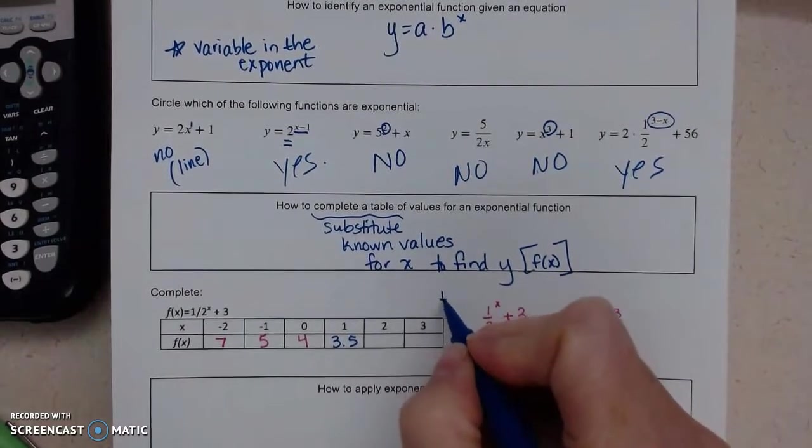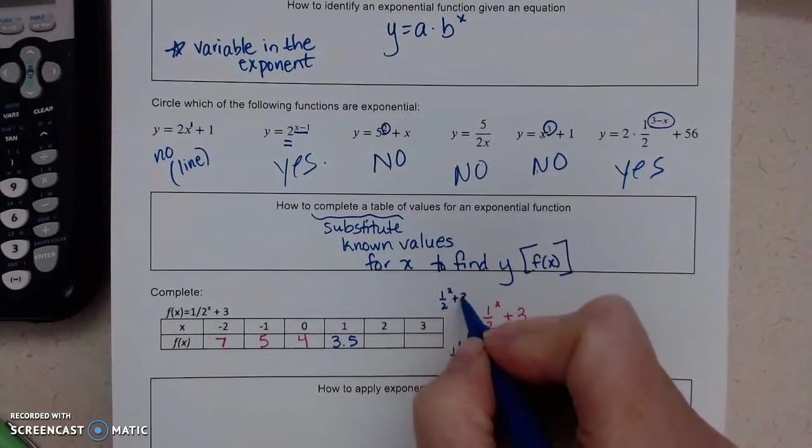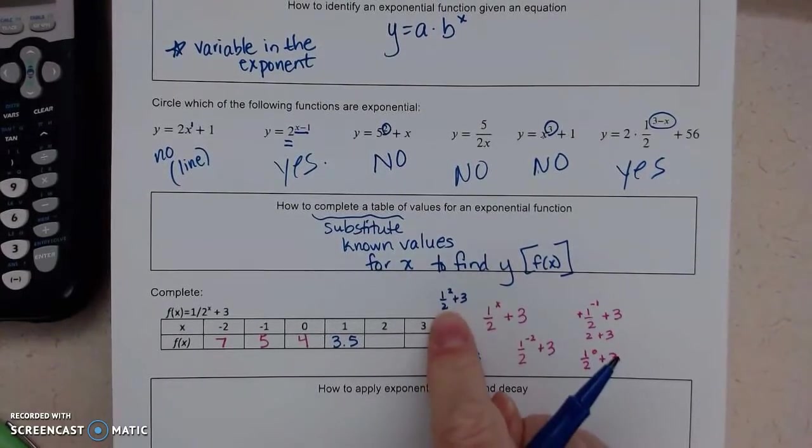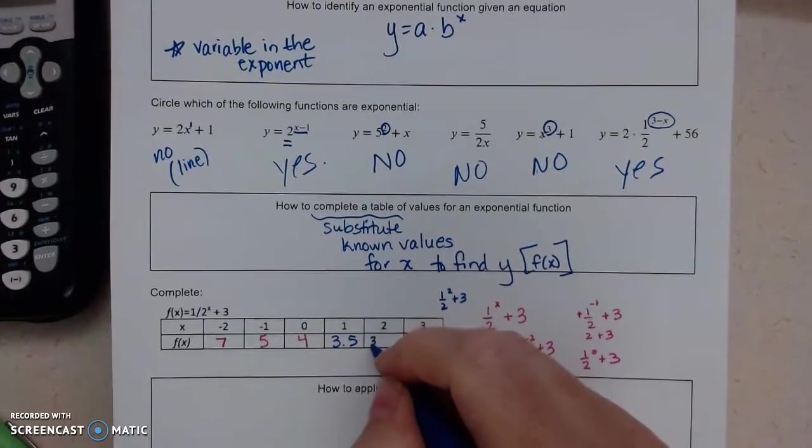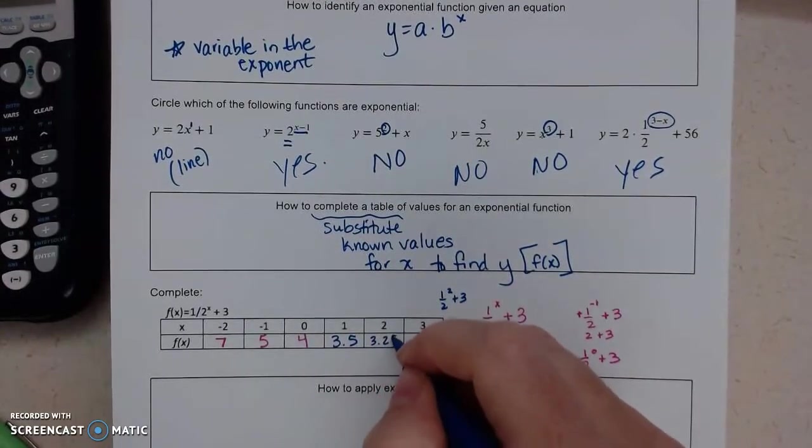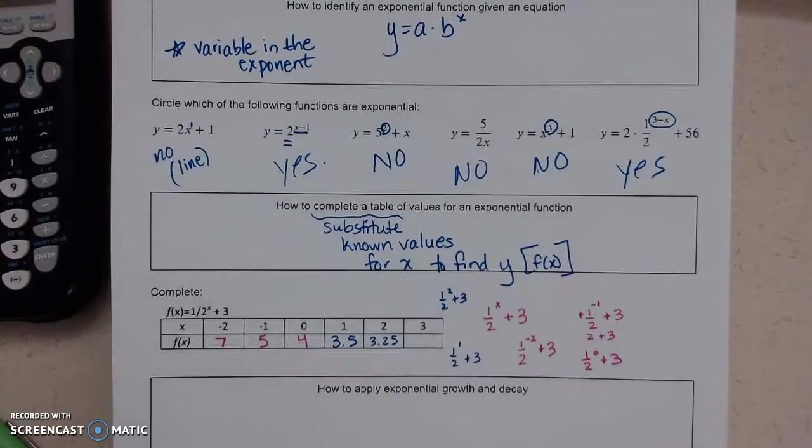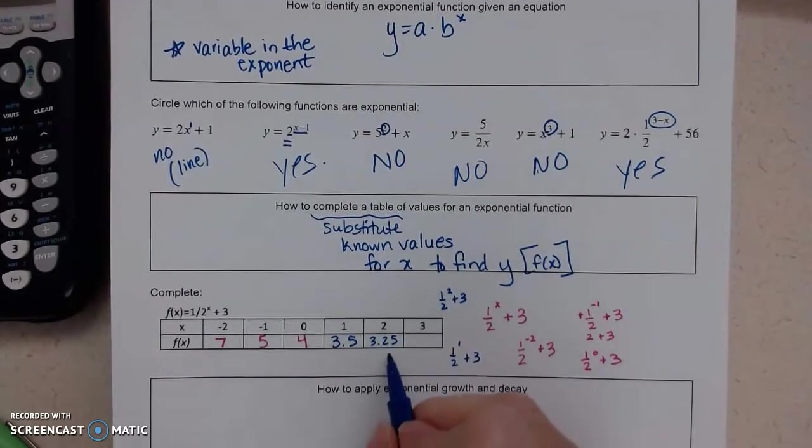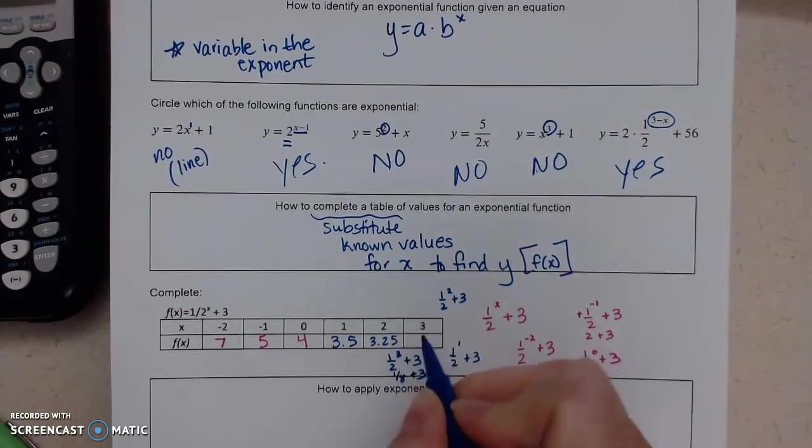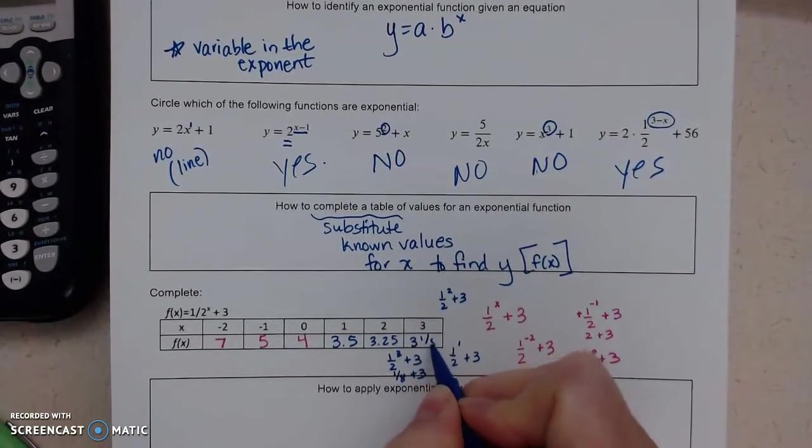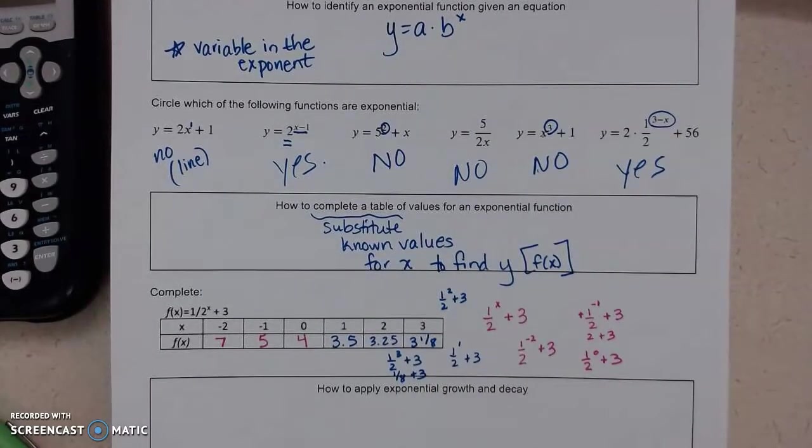2, I get 1 half to the 2 plus 3. 1 half squared is 1 fourth. 1 fourth plus 3 is 3 and a fourth, or 3.25. And then 3, I get 1 half cubed plus 3. So 1 half cubed is 1 eighth plus 3. I'm going to write that as 3 and 1 eighth. Mixed numbers are fine.